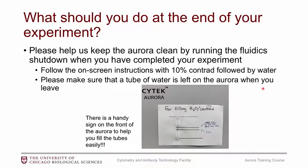At the end of your experiment, keep the Aurora clean by running the fluidic shutdown — it's more of a clean than a shutdown. Just follow the on-screen instructions: 10% Contrad followed by water. I have a measurement tool with a line at three mils to help you estimate where to fill the tube. Always make sure there's a tube of water left on the Aurora for the next person, so that when they start up the instrument, the tube is already on there.